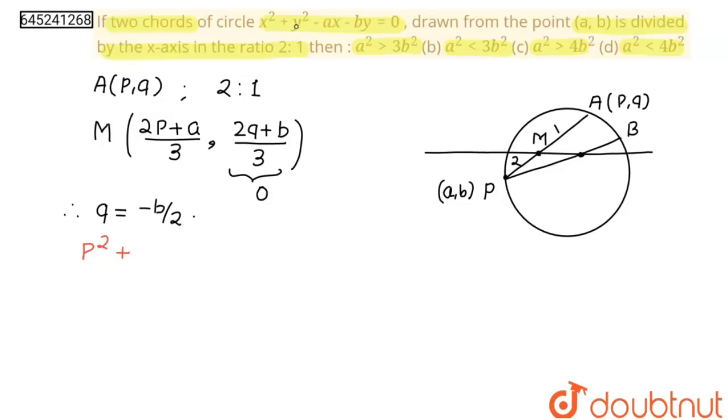Plus, I'll put -b/2 at place of y, so this becomes b²/4, and here I'll write -ap. Here -b/2, so this becomes +b²/2 = 0.